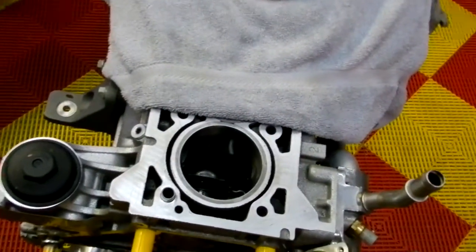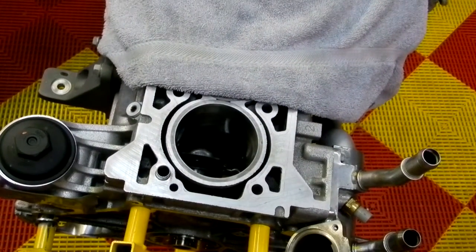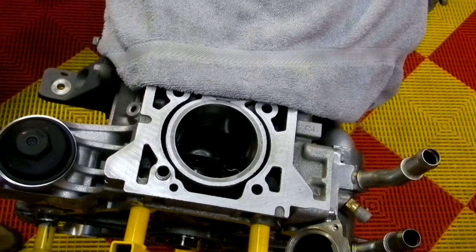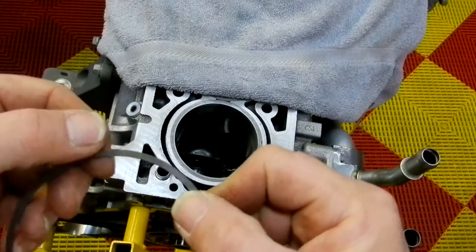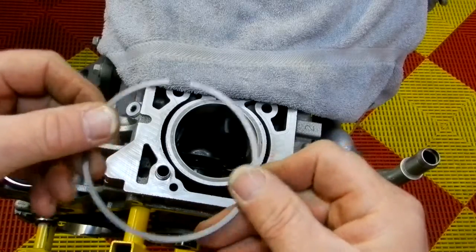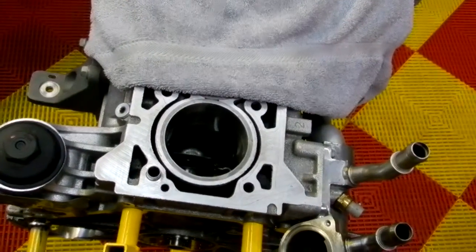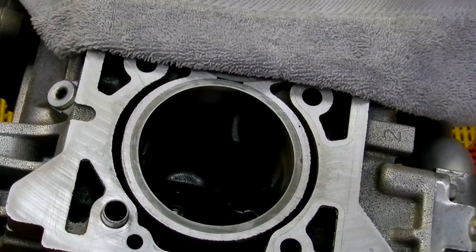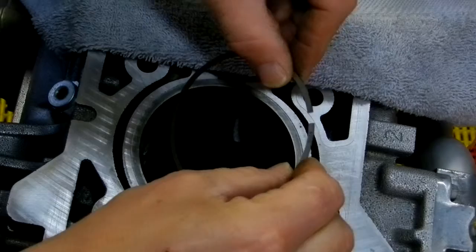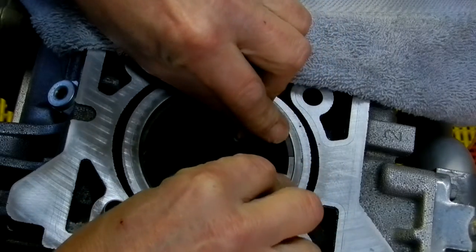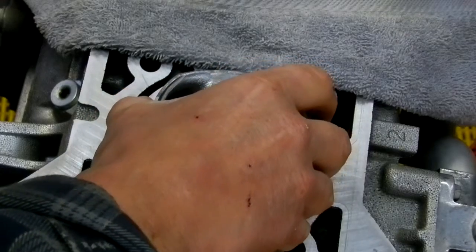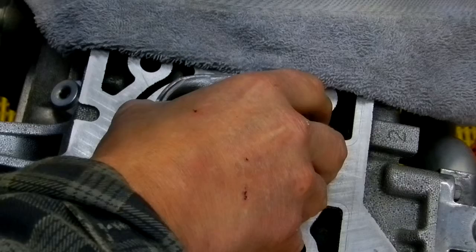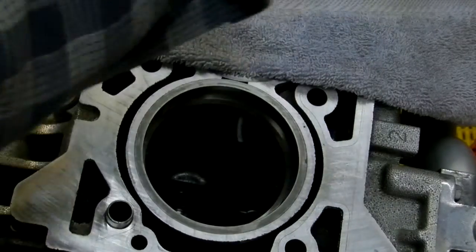I'm going to take the top ring. This particular ring is identified - some of these rings have dots on them. This one has some text here, it says N200, whatever that might mean. What you want to do is take the ring, compress it, and get it into the bore. Then I take one of the old pistons and I push that ring down so it's square in the bore. It ends up being about an inch down the bore, which is fine.